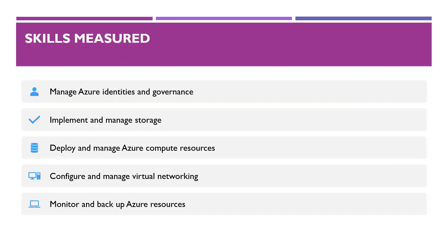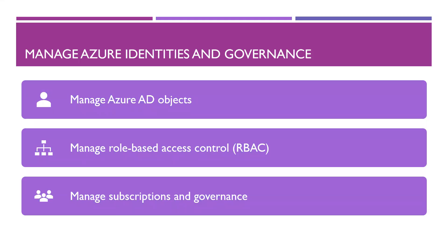Skills measured — what areas are covered in the AZ-104 exam? Manage Azure identities and governance; implement and manage storage; deploy and manage Azure compute resources; configure and manage virtual networking; and monitor and backup Azure resources. Let's talk about each topic. First: Manage Azure Identities and Governance, which makes up 15 to 20 percent of the exam.